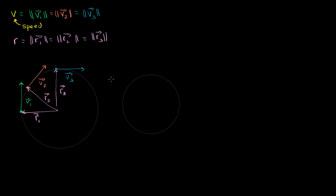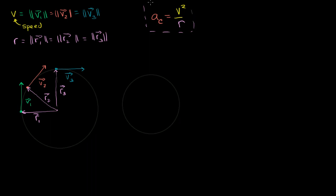What I want to do in this video is prove to you visually that given this radius and given this speed, the magnitude of the centripetal acceleration — I'll write that as a sub c, a scalar quantity — is going to be equal to our speed squared divided by the radius of the circle. This is what I want you to feel good about by the end of this video.